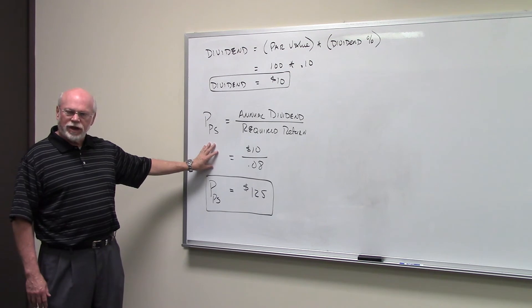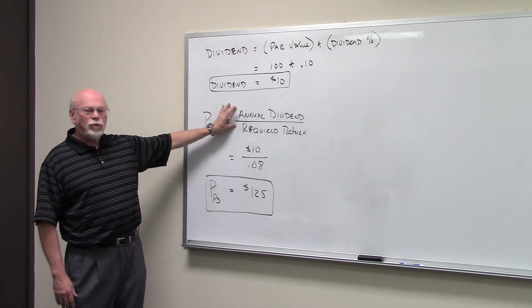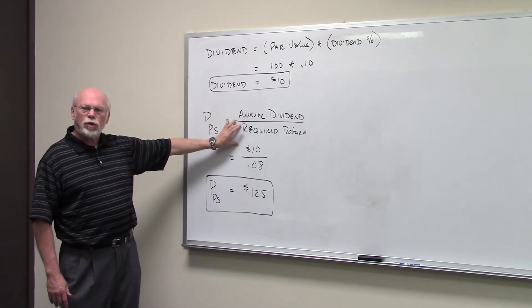They then want us to value the stock. Well, we're going to take the annual dividend, $10, and divide it by our required return.